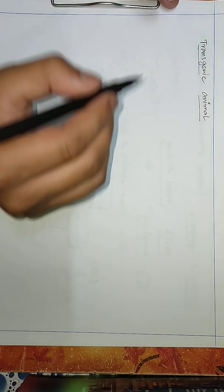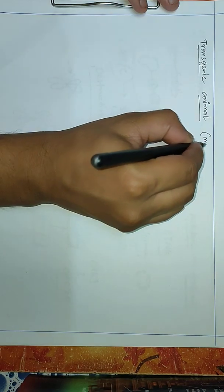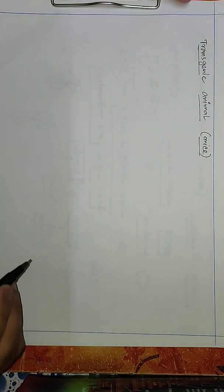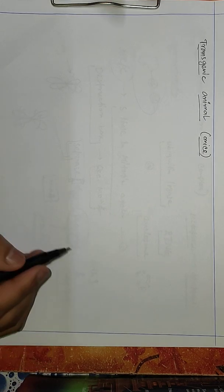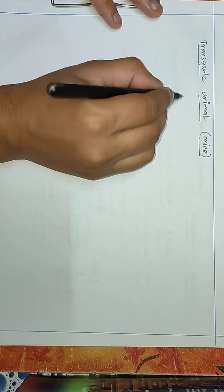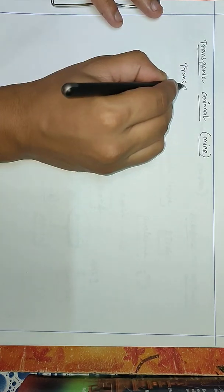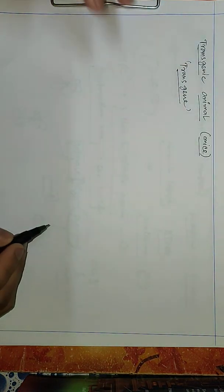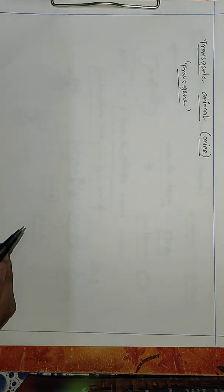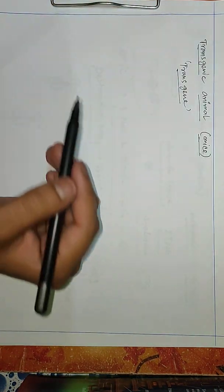So today's video is all about transgenic animals. In this case, we will consider mice. The method for creating transgenic animals involves introducing a transgene of our own choice, which normally doesn't belong to that organism. We introduce this transgene into the specific organism and express it.